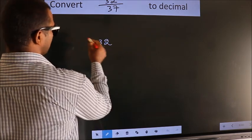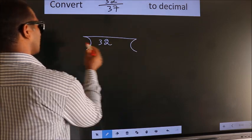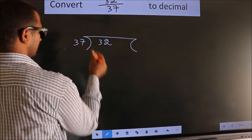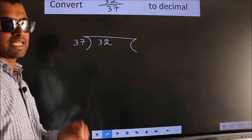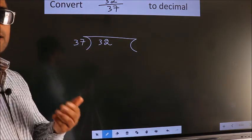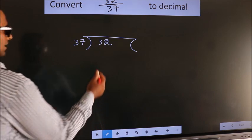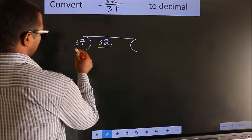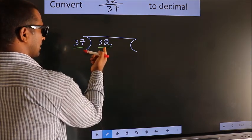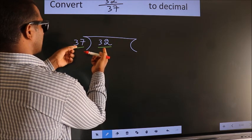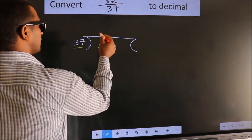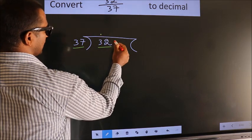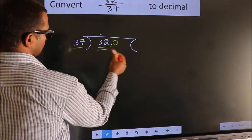32 here, 37 here. This is your step 1. Next, here we have 32, here 37. 32 is smaller than 37, so what we should do is put a dot here, take 0 here. So 320.